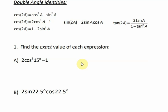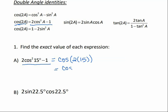Using these double angle identities, we're going to find the exact value of each expression. For part A, it says 2 cosine squared 15 degrees minus 1. If we look at the cosine double angle identities, this middle identity looks like this: 2 cosine squared a minus 1. So our 15 is our a. This equals the cosine of 2 times 15, which is the cosine of 30 degrees. The exact value of cosine of 30 degrees is the square root of 3 over 2.